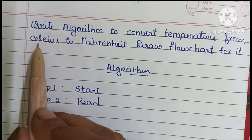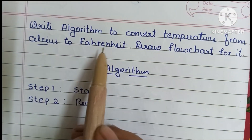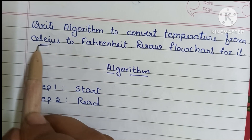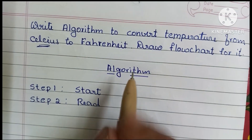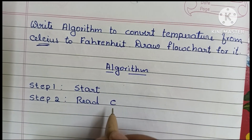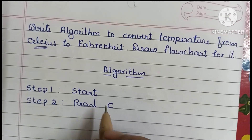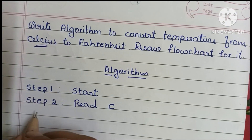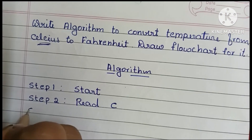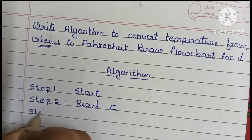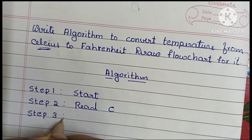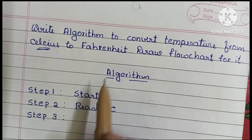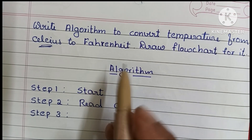Step 2: we have to read the input value. Here we have to convert temperature from Celsius to Fahrenheit, so we read the Celsius value. The variable C represents the value of Celsius.